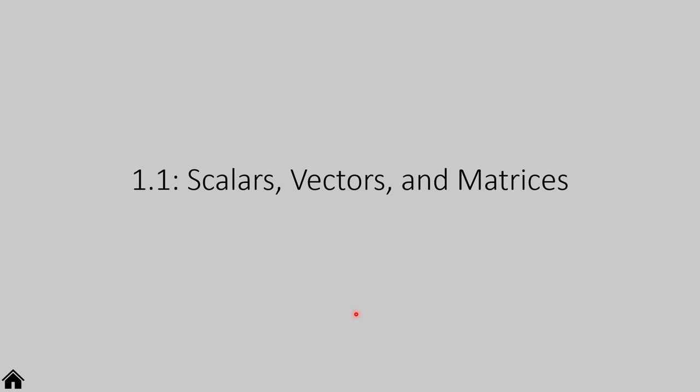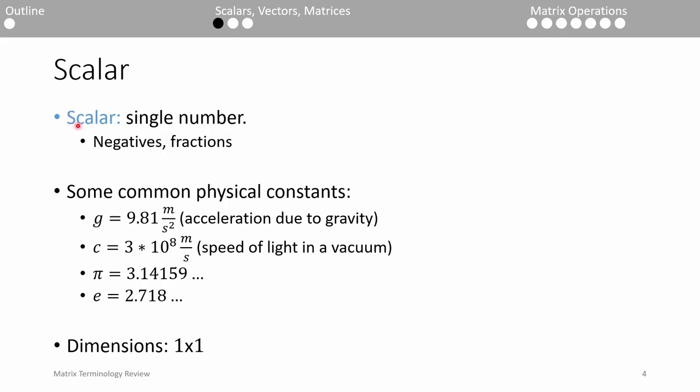Let's start by differentiating scalars, vectors, and matrices. A scalar is just a single number. Scalars can be positive, zero, negative, rational, irrational, fraction, decimal, and more. The physical constants you're accustomed to seeing, such as pi and e, are all scalars. The dimension of a scalar is one by one.